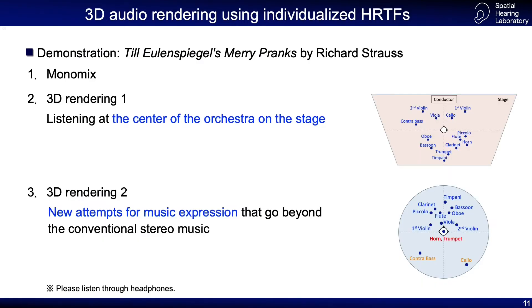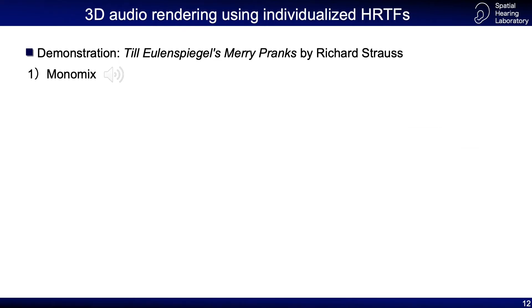Now, let's start the demonstration. The music is the first minute of Till Eulenspiegel's Merry Pranks by Richard Strauss. We present the sounds of three different rendering methods: Monomix, 3D Rendering 1, and 3D Rendering 2. Please listen through headphones. First of all, play with Monomix.